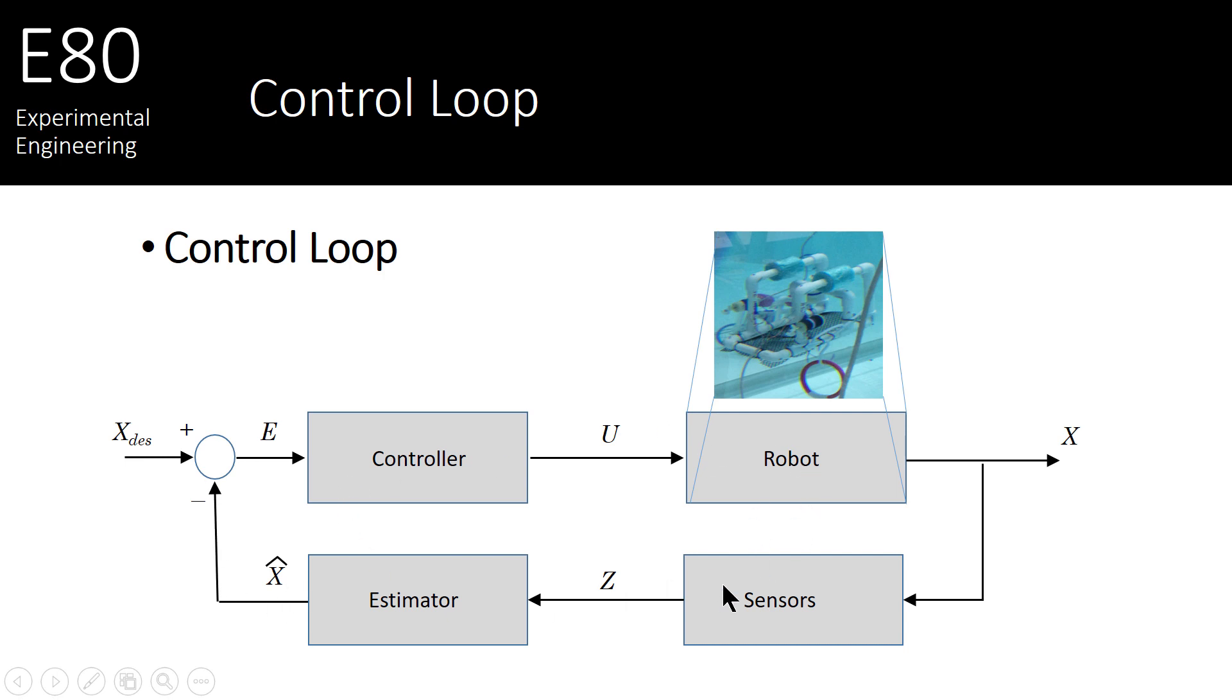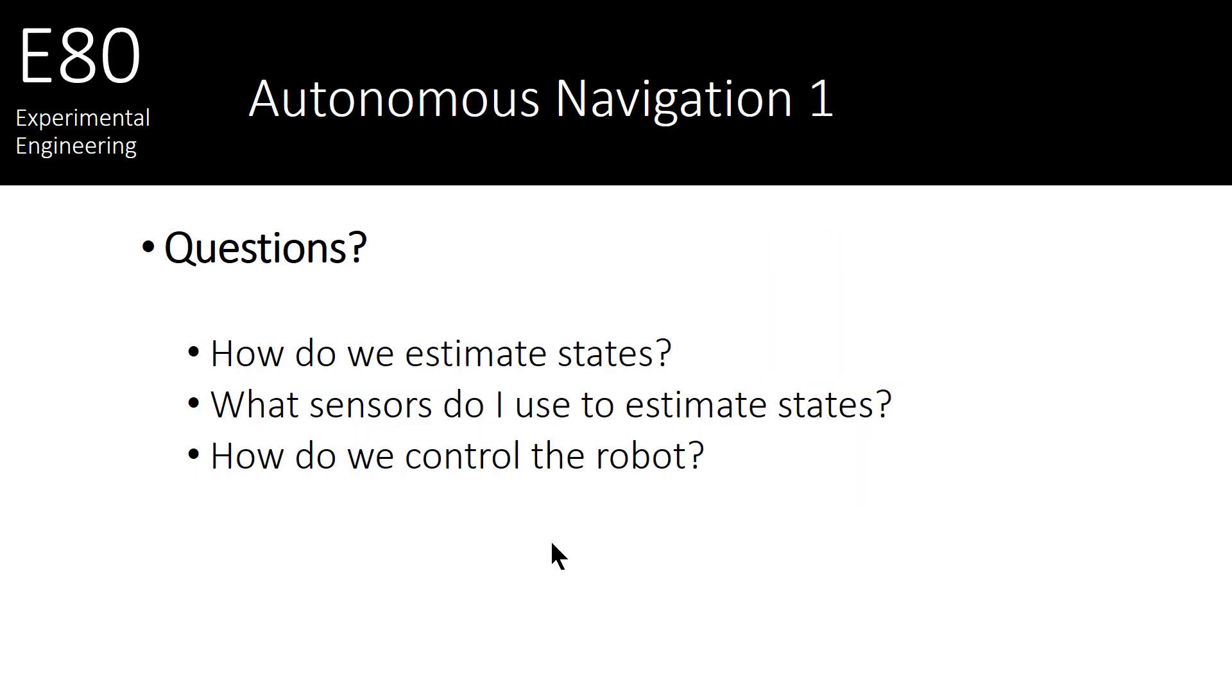And we just keep going around this loop. We have a desired state, an estimated state. The difference is fed into a controller, which sends to the robot, and so on and so forth. And these control loops can run anywhere from hundreds of hertz to maybe on the order of even one hertz. We're going to use the next few videos to look at all these different components. How we might architect a state estimator, the sensors that would be feeding into such a state estimator, and then if we actually have state estimates, what type of controller we might use to make this robot move around.